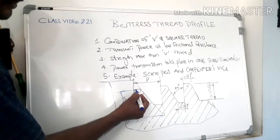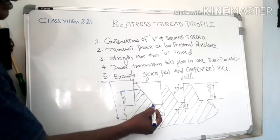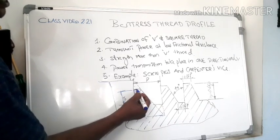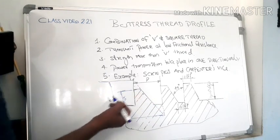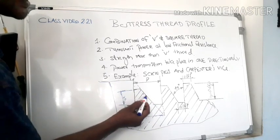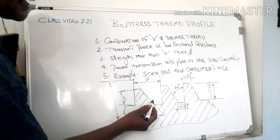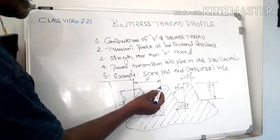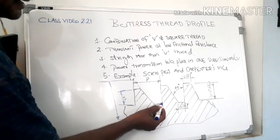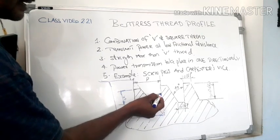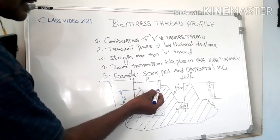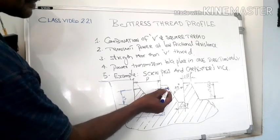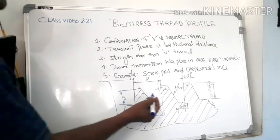On the upper side and lower side, actual crest and root are flattened. One side is inclined at a 45 degree angle, and other side is not a right angle - it is slightly a taper surface given at an angle of 7 degrees. This is our parameter of buttress thread.